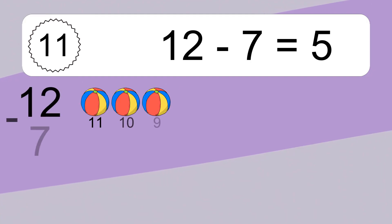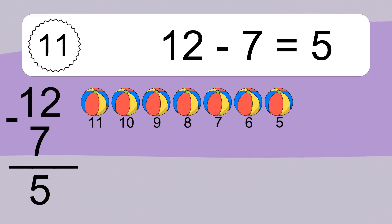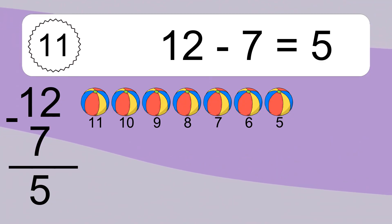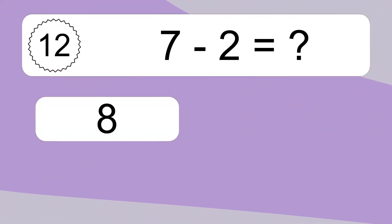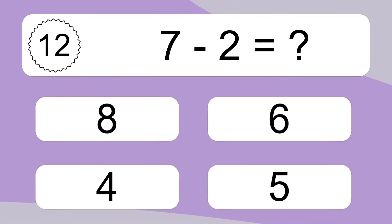12 minus 7 equals what? 12 minus 7 equals 5. Let's count it: 11, 10, 9, 8, 7, 6, 5.